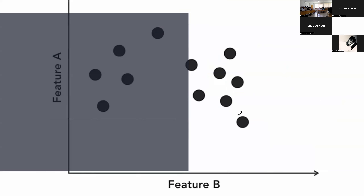We have 12 instances and we want to illustrate how K-means clustering works. These 12 items belong to two features: feature A and feature B. We don't necessarily have labels for them. Our goal is to partition this data distribution into K equals 3, meaning we want to create three partitions or three clusters.